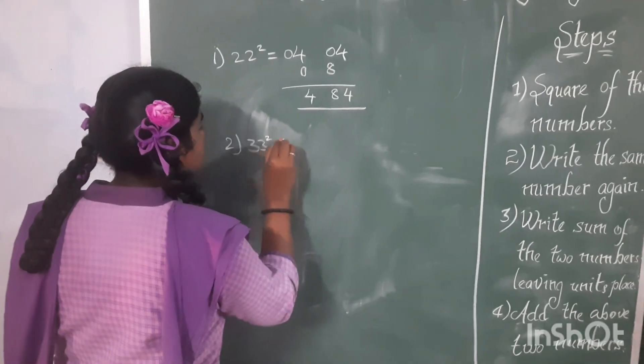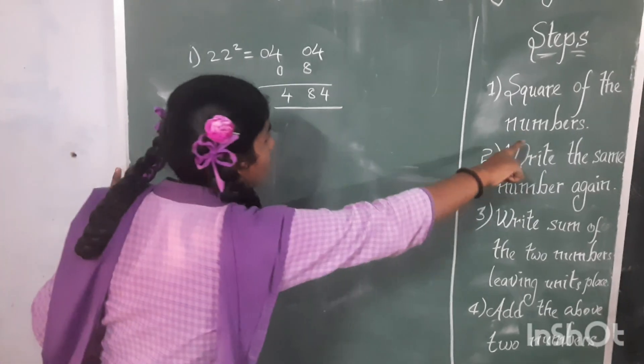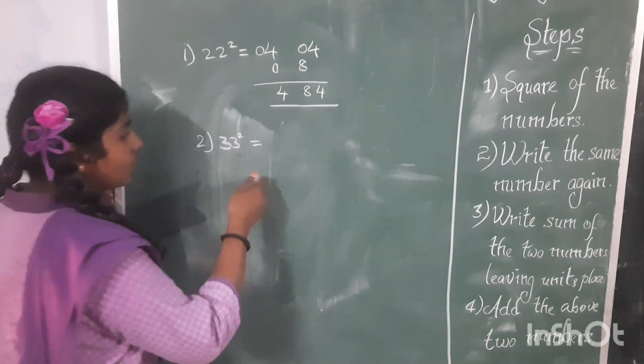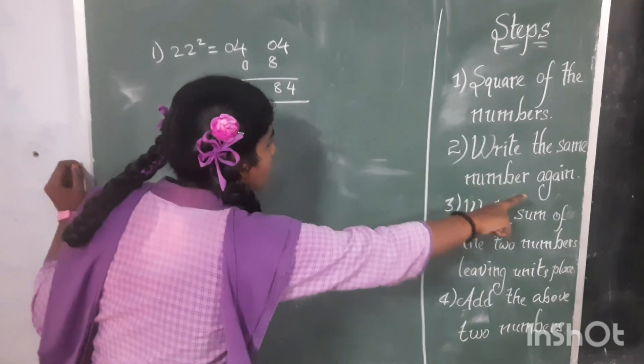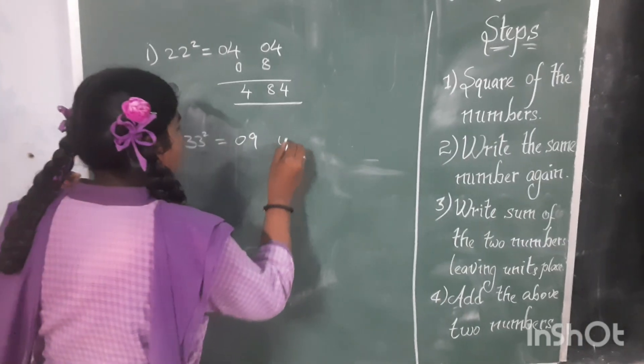33 square. Step 1, square of the number. Here 3 is a number which square is 9. I am writing 09. Second step, write the same number again. 09.